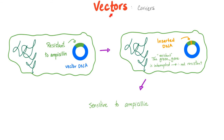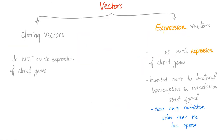Let's talk about the vectors. What does the word vector mean? A carrier. This is a vector DNA that will carry this green area. This green area made the bacteria resistant to ampicillin, but the bacteria is infecting me — I would like it to be sensitive to ampicillin so that ampicillin can kill it. Easy — you see this green area? Interrupt it with another sequence or gene. Now it's interrupted; if it's interrupted, it's useless. Now the bacteria is not resistant to ampicillin — actually, the bacteria is sensitive to ampicillin. You can give ampicillin to kill the bacteria. Vectors are cloning vectors or expression vectors. The expression vectors permit expression — they are inserted next to the bacterial transcription and translation signal because they want to express themselves. Some have a restriction site near the lac operon.